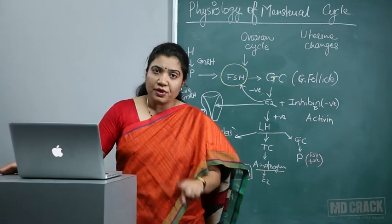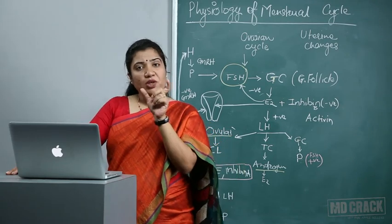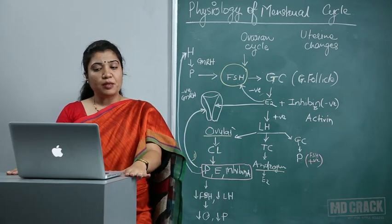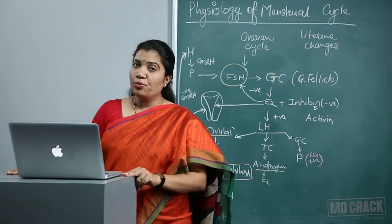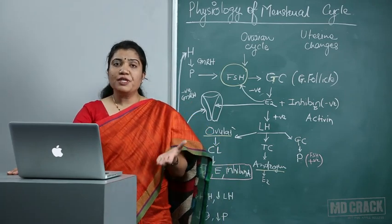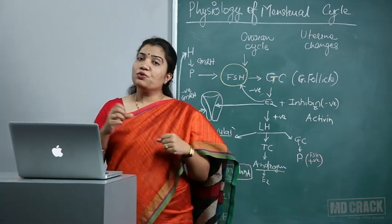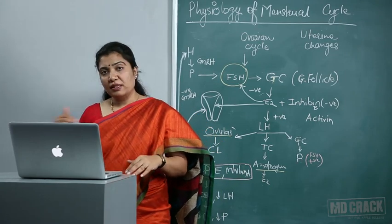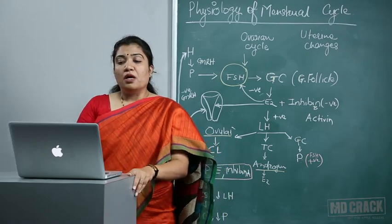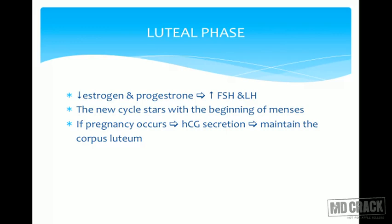In infertility workup, progesterone levels are measured on day 21 or 22. The corpus luteum, secreting progesterone and sustained by LH, loses sensitivity to gonadotrophins and gradually undergoes luteolysis, with decreased estrogen and progesterone. Withdrawal of these hormones leads to vasoconstriction of the spiral arterioles in the endometrium, causing desquamation and shedding as menses. As hormones are withdrawn, the hypothalamus perceives this, secretes GnRH, and the pituitary gradually secretes FSH then LH, beginning the next menstrual cycle.